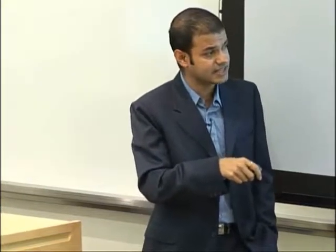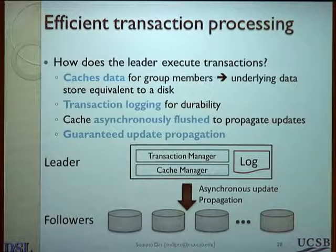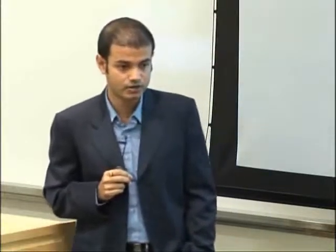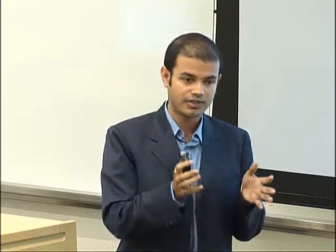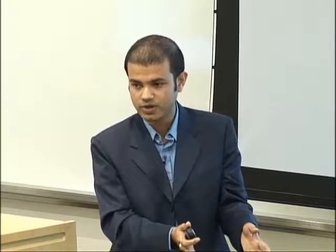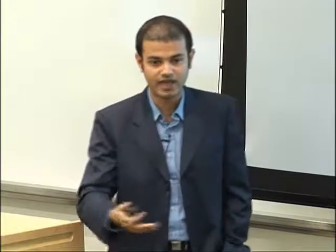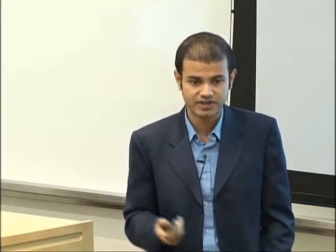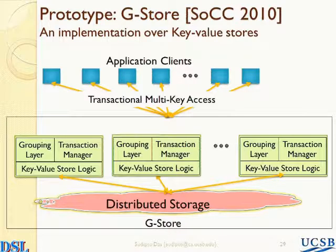The cache is asynchronously propagated to the followers, so that the followers eventually get all the updates. There is a guarantee that before a group is deleted, all updates have propagated to the followers. This way, by paying the cost of one distributed transaction at the start of the group, the rest of your life becomes easy and efficient. Essentially you amortize the cost — after executing a few transactions, you break even and start getting the profits.